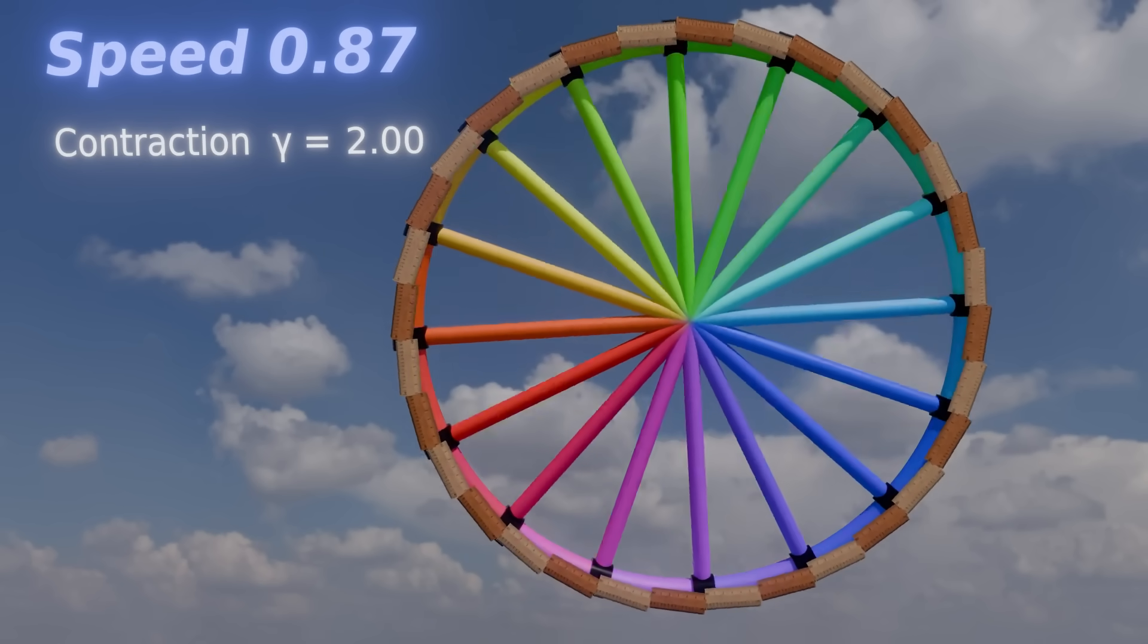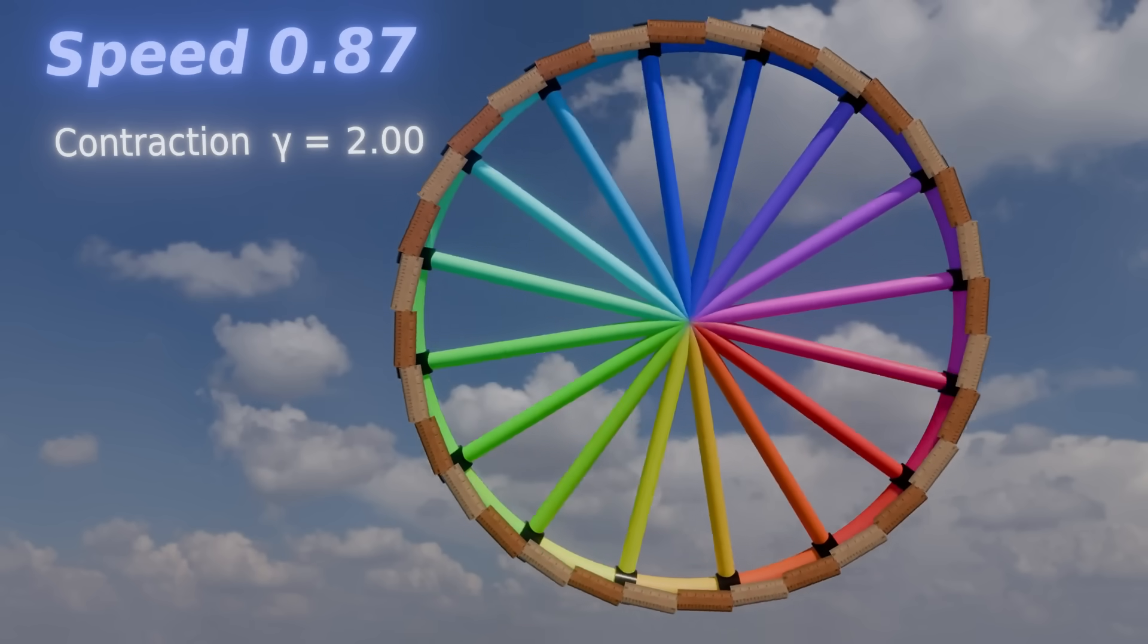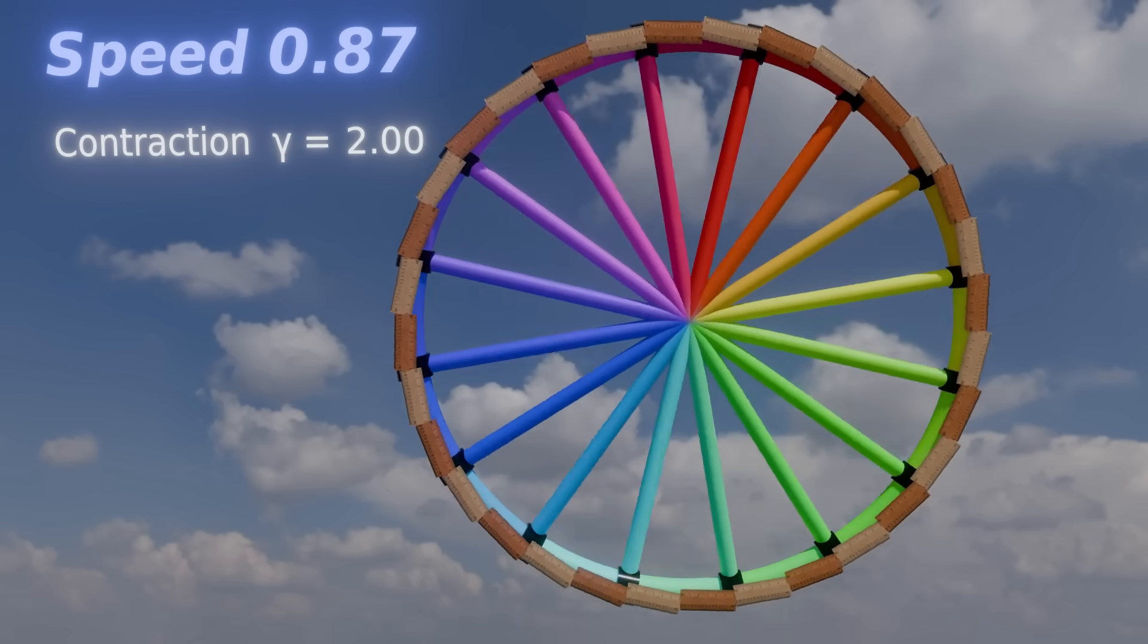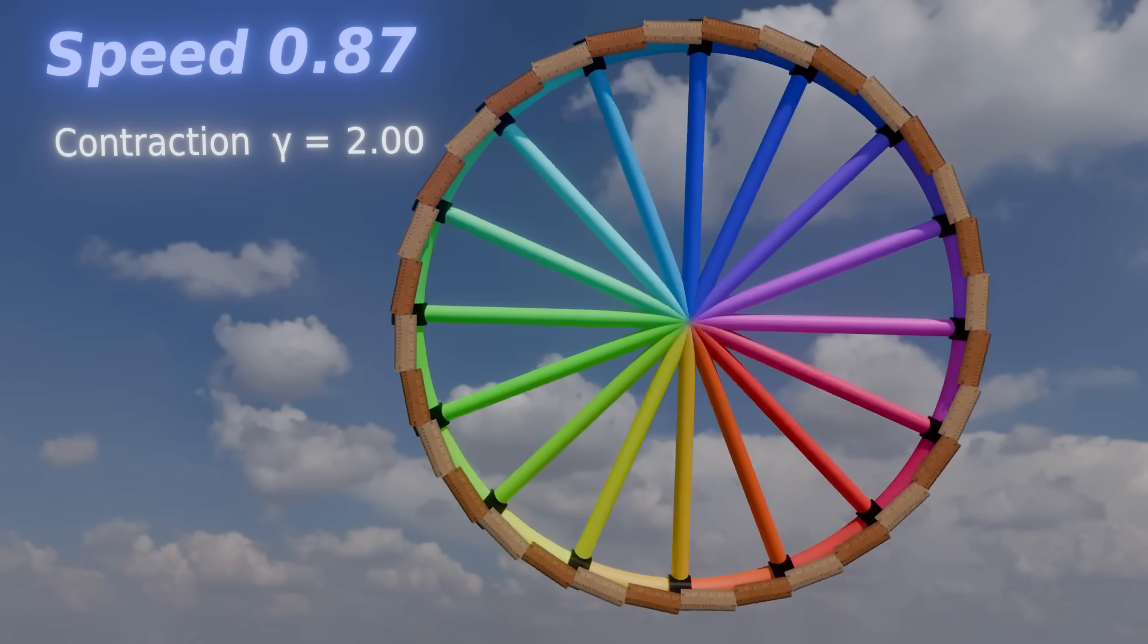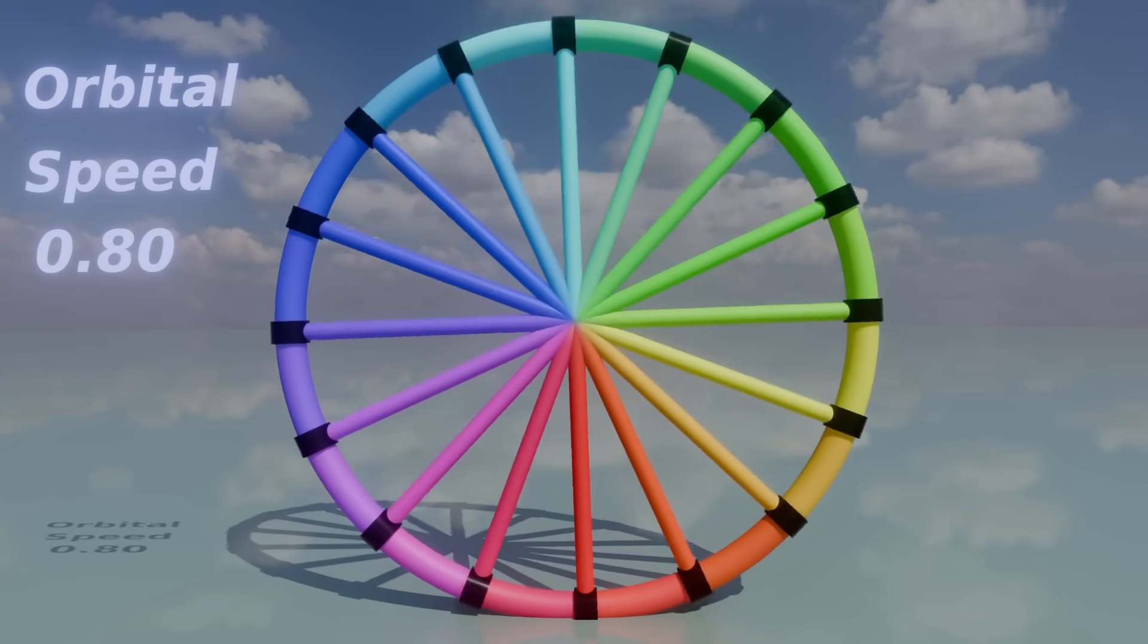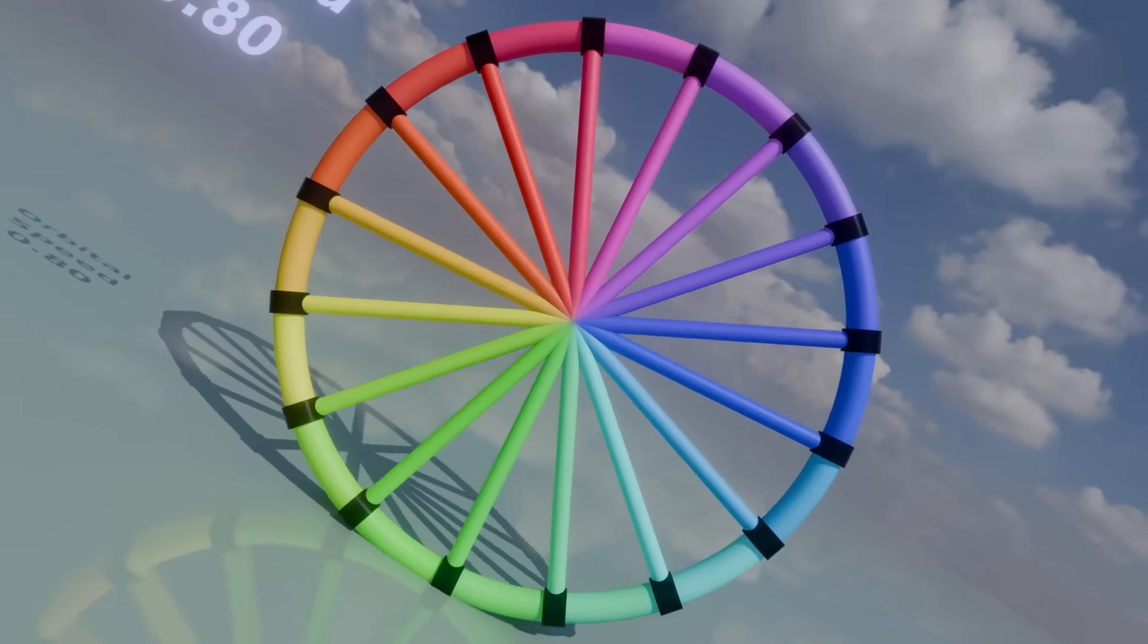But wait a minute. The rim of the wheel is also moving. So, should the rim itself be the one that is contracted? And the answer is yes. The rim also tries to contract. So, do we have a paradox here?